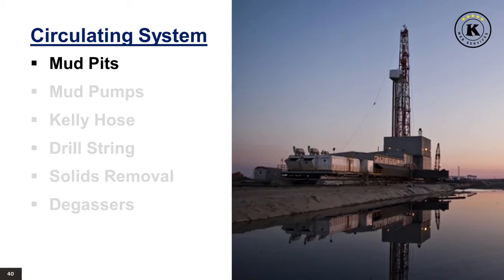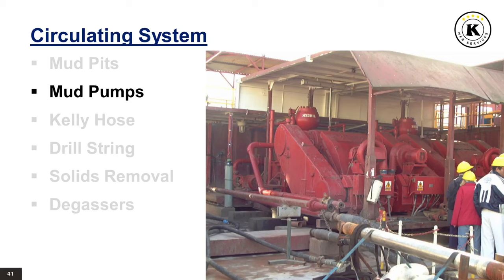Two or three pumps are usually found on a rig site, their function being to circulate drilling fluid at the required pressure and volume using a reciprocating piston pump. Pumps may be classified on four features: (1) number of cylinders — normally two (duplex) or three (triplex); (2) pumping action — double-acting pumps use both sides of the piston, filling one side while discharging the other, and are typical of duplex pumps; single-acting pumps use only one side of the piston, filling or discharging; (3) piston stroke, which is fixed and determines output — the longer the stroke, the greater the output; and (4) cylinder diameter or liner size.